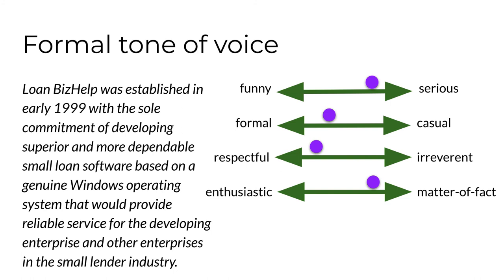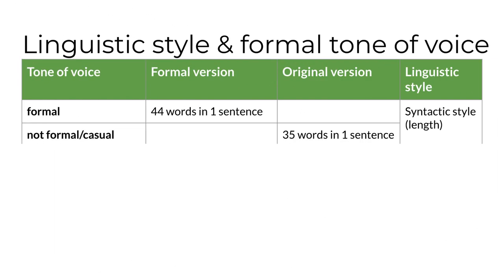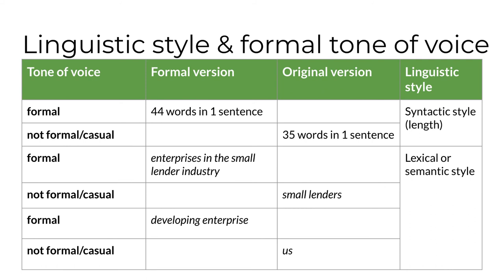Take a second to review the formal version I created. What I did here was work from the serious version I created earlier and replace for us and other small lenders with for the developing enterprise and other enterprises in the small lender industry. I think that moves the tone more to the formal side of the dimension, but I don't think it affects any of the other dimensions. The syntactic style of the formal version is longer than the original in terms of sentence length. It incorporates changes made in the serious version — passive syntax and lexical or semantic choices that are both more serious and formal. Two additional lexical or semantic differences are replacing the short phrase small lenders with enterprises in the small lender industry.